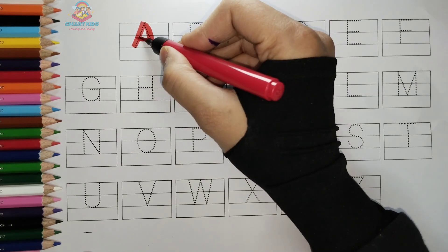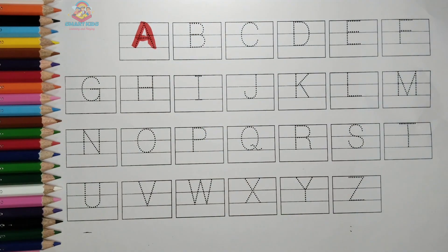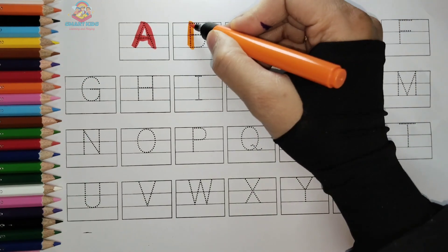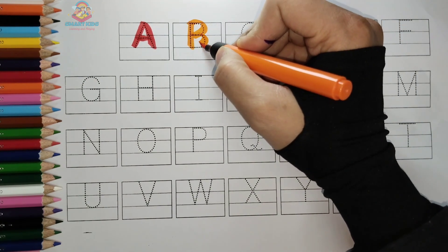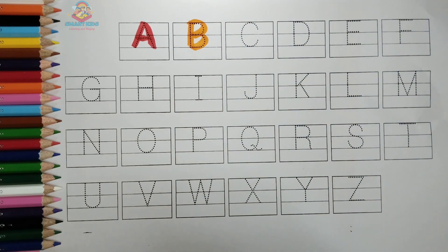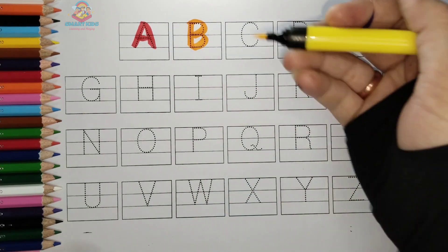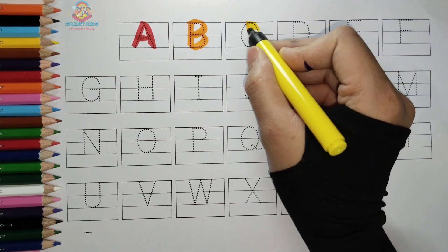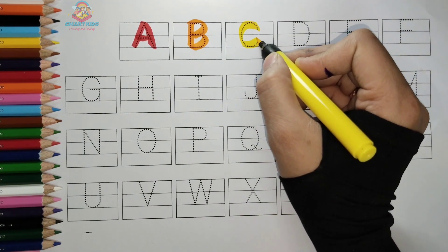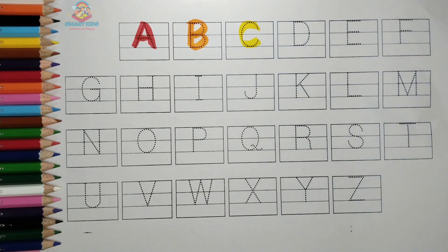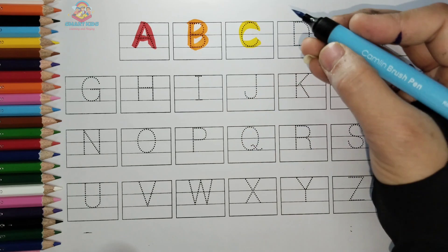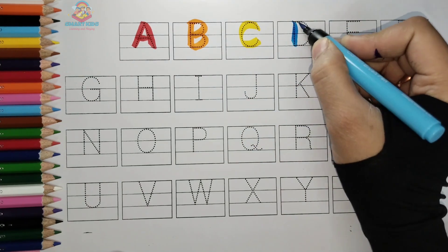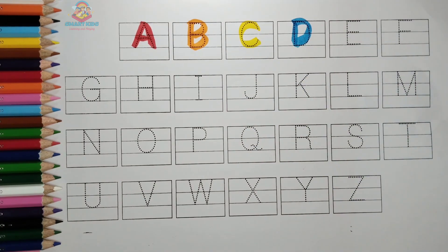Red color. A, A for apple. Orange color. B, B for ball. Yellow color. C, C for cat. Sky blue color. D, D for dog.